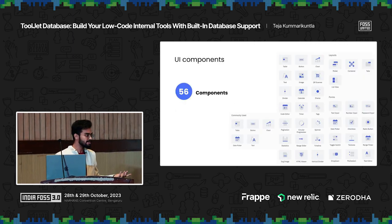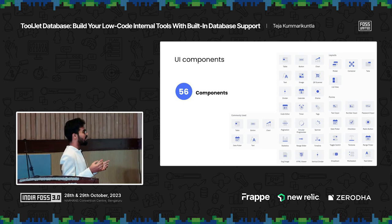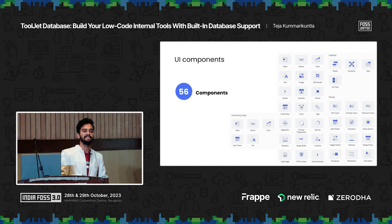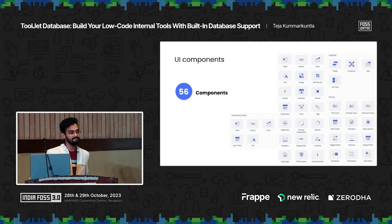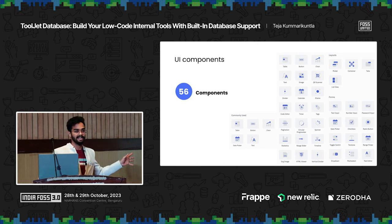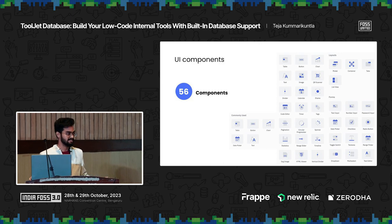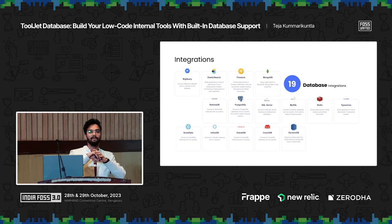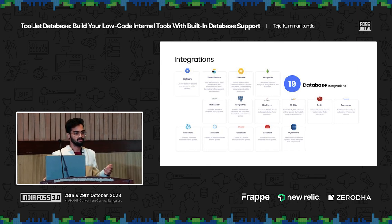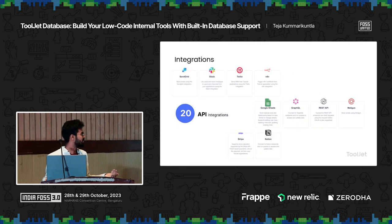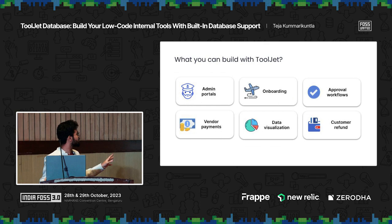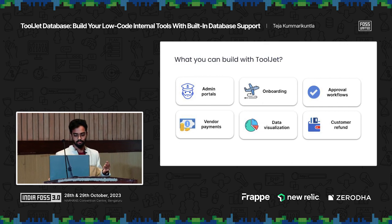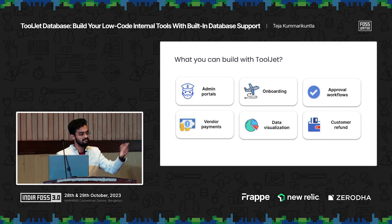When I say components, the UI can be built with around 56 components — tables, forms, and more. Beyond components for the front-end aspect, for connecting to backend services, APIs, or databases, you need integrations where you can quickly connect by putting in some credentials and start performing queries — everything you'd do from a SQL console. There are 19 database connections supported, plus API integrations. With all of this you can build admin portals, onboarding flows, and more.